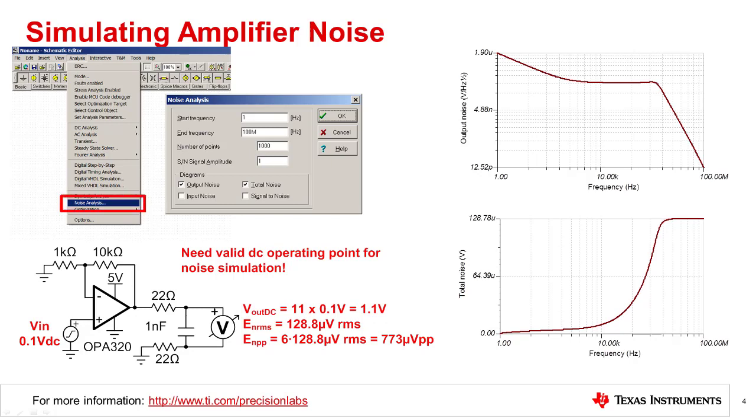Once linear operation of the amplifier is confirmed, run analysis, noise analysis, into a frequency range that will allow the noise to converge to a final value. Normally, this is about a decade beyond the bandwidth of the amplifier. In this example, the amplifier's bandwidth is 20 megahertz, so we try 100 megahertz for the maximum frequency. You can see over at the right the spectral density and integrated noise curves. Notice that the integrated noise converges at 128.78 microvolts. This is the total RMS noise that we will use in the final calculation.